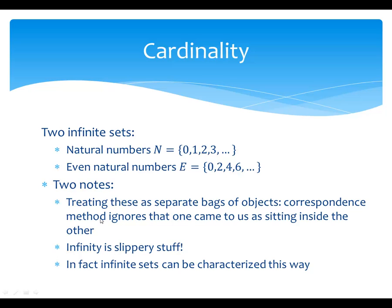The cardinality method of comparing things ignores all that structure very purposely and just says: I can make a correspondence between 0 and 0, 1 and 2, 2 and 4, 3 and 6. And the main point is that infinity is slippery stuff — you can throw away some, or most even, of an infinite set and still have something that's exactly the same size as what you started with. In fact, it's not an accident. An infinite set is exactly the kind of set where you can do that. Infinite sets can be characterized as sets that are equivalent in cardinality to a proper subset of themselves.